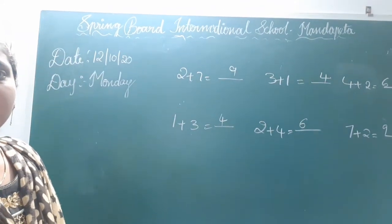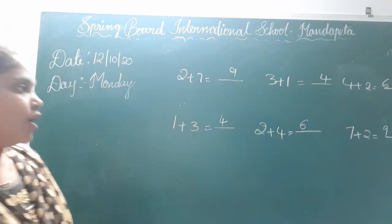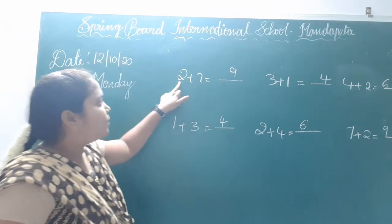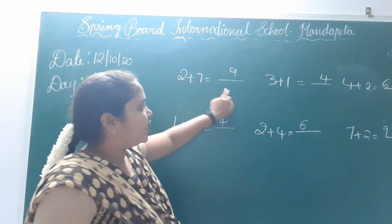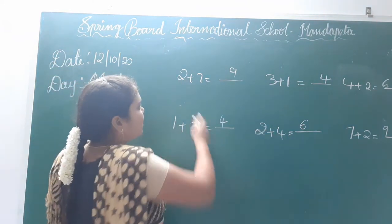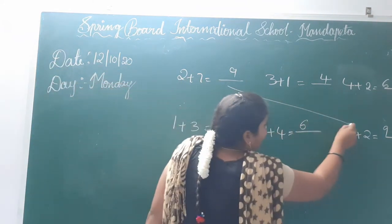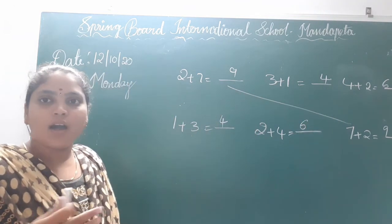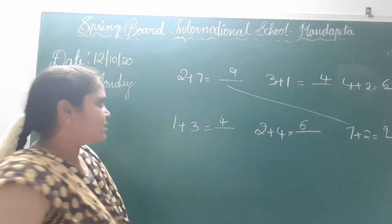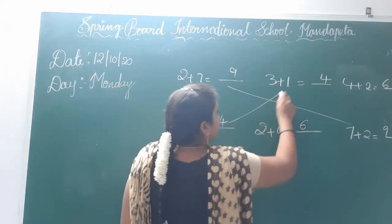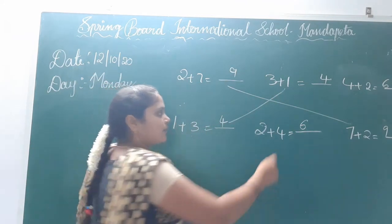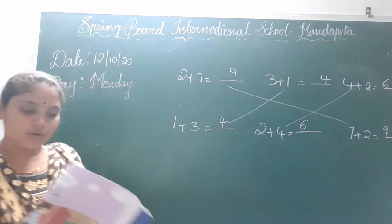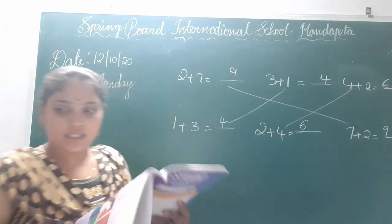Now we have to match the cups to the saucers. 2 plus 7 and 7 plus 2 — we have just changed the order but total does not change. 1 plus 3 matches with 3 plus 1. 2 plus 4 matches with 4 plus 2. We have to match like this, children.